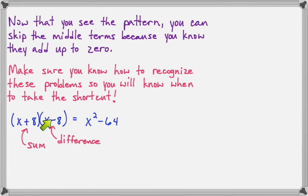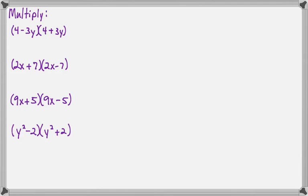So you need to have a sum and a difference, and the two terms in each parentheses need to be exactly the same. So first times first would be x squared, skip the outer plus inner, last times last would be minus 64. Alright, now we will multiply these four examples together. So here we go. First times first is 16, skip the outer plus inner, last times last is going to be negative 9y squared.